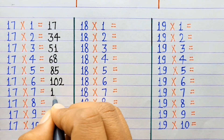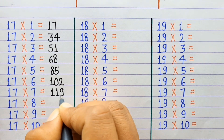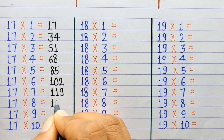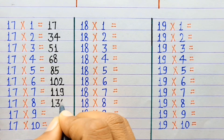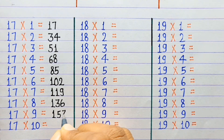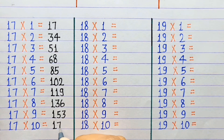17×7=119, 17×8=136, 17×9=153, 17×10=170.